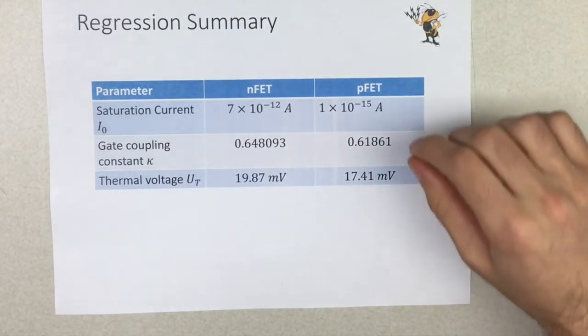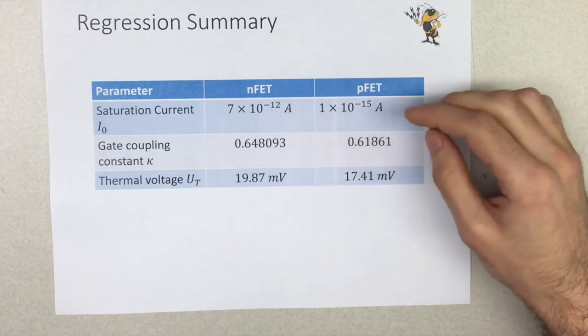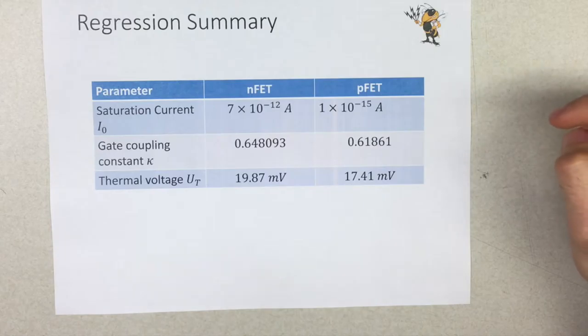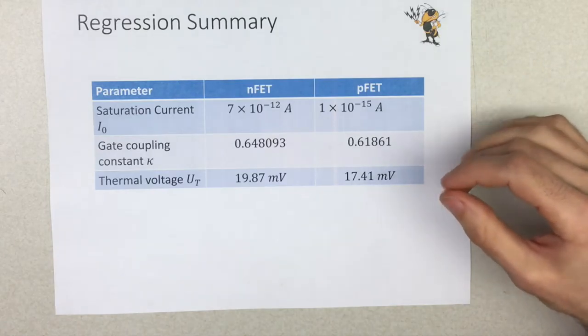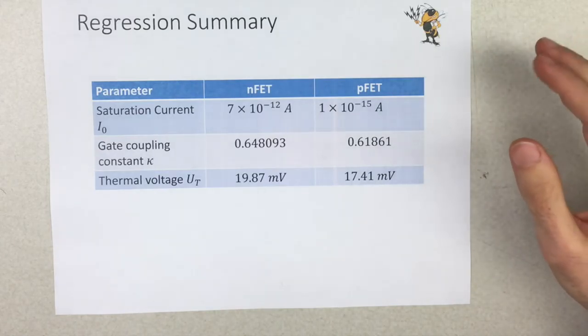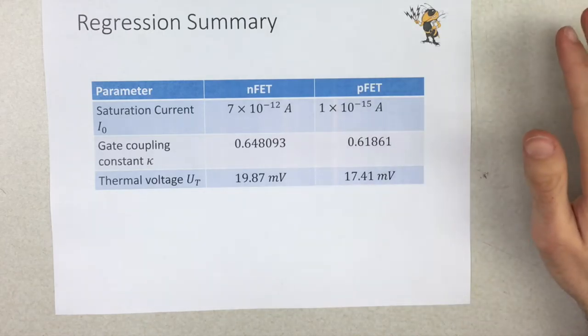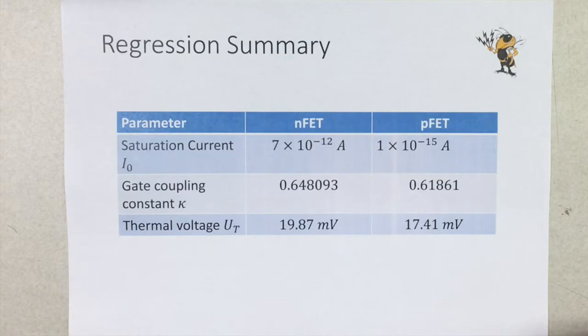So the saturation currents we got were in the picoamp, femtoamp range, which is exactly what we would expect for a saturation current in MOSFETs. And we got kappa values around 0.7 is the expected, but 0.6 to 0.7 is exactly what we would expect. So these are good values. And the thermal voltages that we got agree approximately with room temperature values of about 25 millivolts. What we would expect, they're a little bit lower, but essentially they're in agreement.